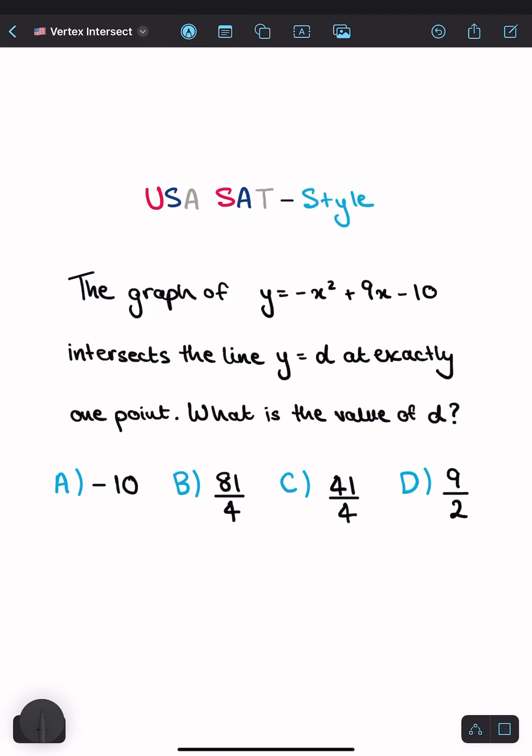Let's solve this SAT-style question. The graph of y = -x² + 9x - 10 intersects the line y = d at exactly one point. What is the value of d?